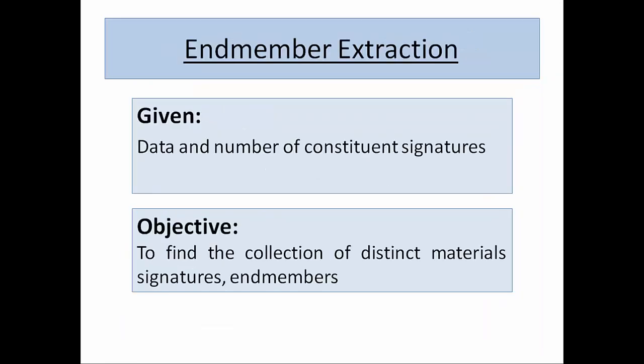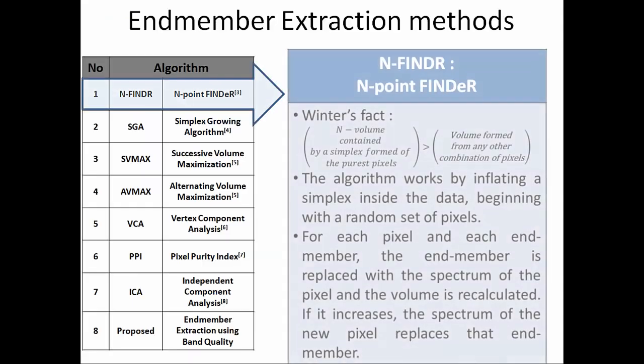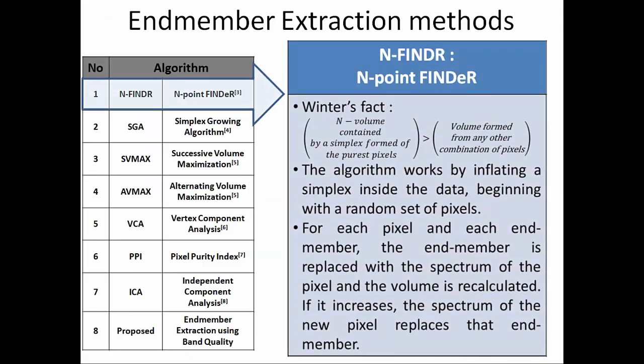From the literature survey, we found that in the linear unmixing model, a number of algorithms exist. We are trying to compare our results with those. The N-finder algorithm is a very important algorithm, and most important algorithms are based on mathematical geometry. Starting from N-finder to ICA, there are 7 standard algorithms we selected to compare with our proposed algorithm. What N-finder says is that it is based on Winters' theorem.